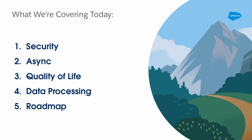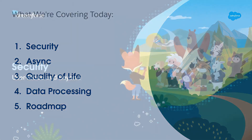First we're going to go over what's new and improved for enforcing security in your Apex code. Then we'll talk about the improvements we're making for async processing, mostly around queueables. We'll look at quality of life improvements for developers from the idea exchange, then data processing and how you can make more out of your Apex code, and then a quick recap of where the roadmap's going.